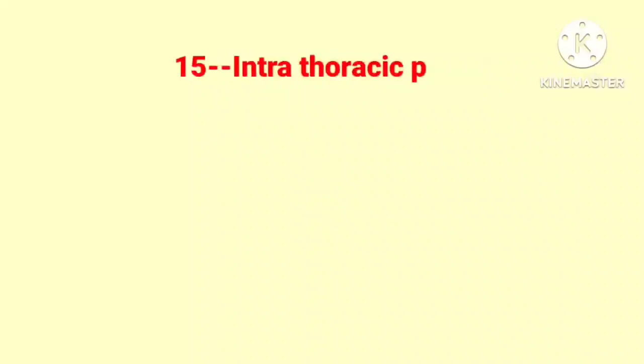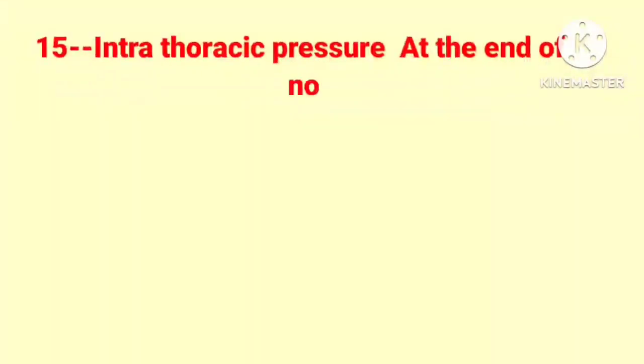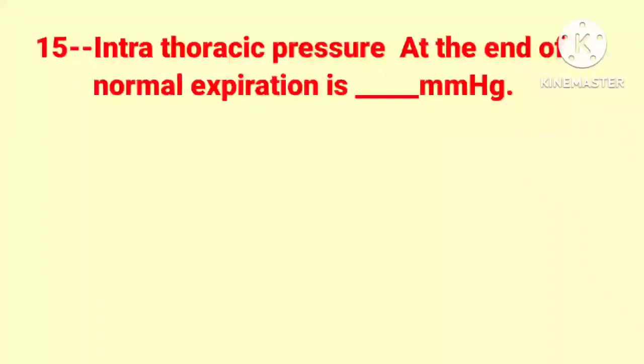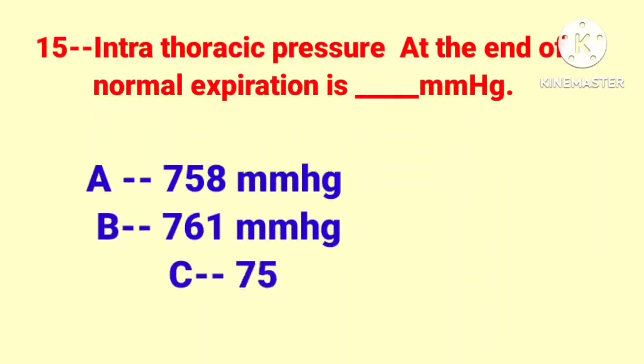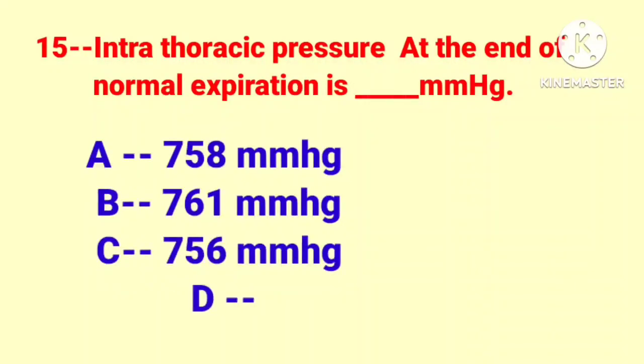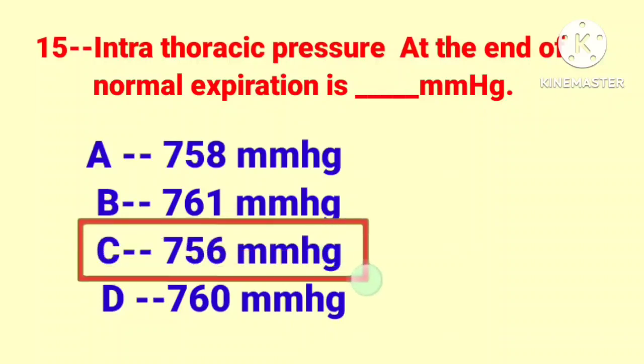Question number 15: Intrathoracic pressure at the end of normal expiration is ___ mmHg. Option A: 758 millimeters of mercury, B: 761, C: 756, D: 760 millimeters of mercury. Correct answer is option C.